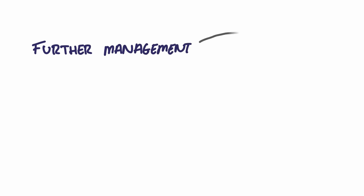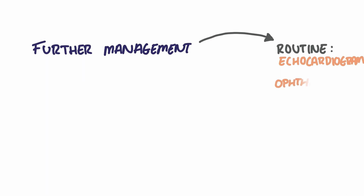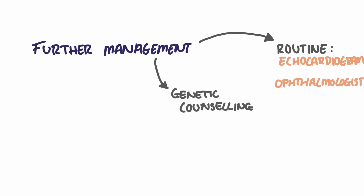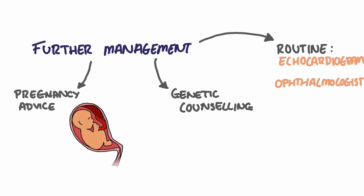Patients are routinely evaluated through annual echocardiograms and by an ophthalmologist to assess for the presence of lens dislocation. Genetic counselling is also important as parents need to consider the implications of having children that may be affected with Marfan's syndrome. Furthermore, pregnancy has also shown to carry a significant risk of aortic aneurysm development, and therefore careful discussion is advised for women that are planning to conceive.